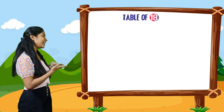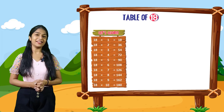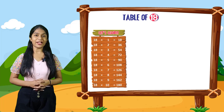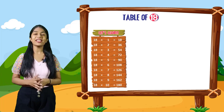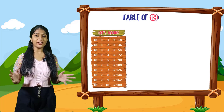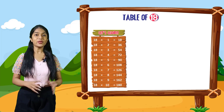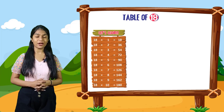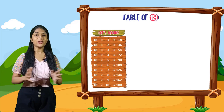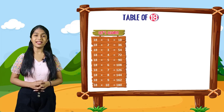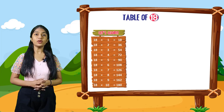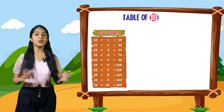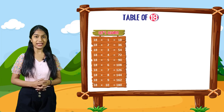So kids, now we will start the table of 18. Let's learn. 18 into 1 is equal to 18. 18 into 2 is equal to 36. 18 into 3 is equal to 54. 18 into 4 is equal to 72. 18 into 5 is equal to 90. 18 into 6 is equal to 108. 18 into 7 is equal to 126. 18 into 8 is equal to 144. 18 into 9 is equal to 162. 18 into 10 is equal to 180.